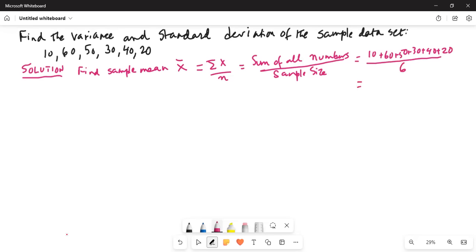It is in your calculator. You do 10 plus 60 plus 50 plus 30 plus 40 plus 20, and that is equal to 210. The sum divided by 6, which is 35.